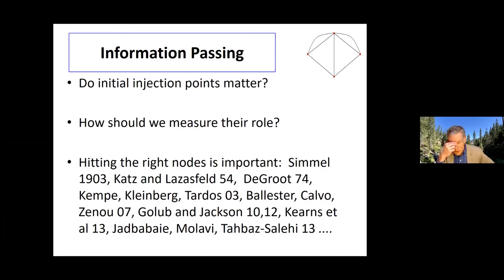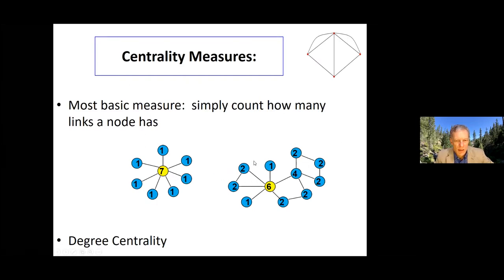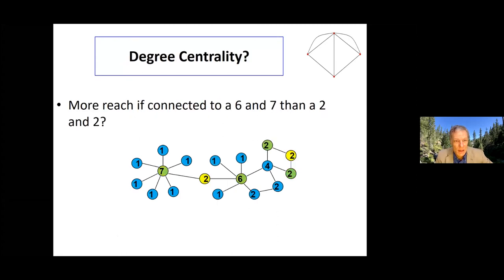The first question we asked in this research project was: do these initial points of injection matter, and how should we measure what their position was in a village? There is a lot of literature going back to Simmel in the early 1900s suggesting that how you seed information in a society can make a big difference. Let's think about what kinds of measures might be good for measuring whether somebody spreads information well. The typical thing would be to use different centrality measures.